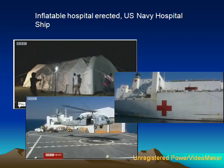To help cope with the many thousands of injured, maimed and the dead, inflatable hospitals have been erected in Haiti. Also, a US Navy hospital ship has been moored outside Port-au-Prince's harbour to help those most seriously injured by the earthquake.